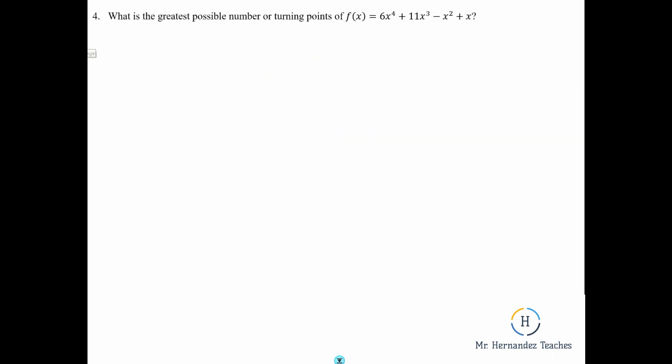Number 4 — what is the greatest possible number of turning points of f of x equals 6x to the 4th plus 11x cubed minus x squared plus x? We're not asking how many turning points there are, just the greatest possible number. You get that strictly from the degree: it's degree minus 1, so 4 minus 1 equals 3. The maximum number of turning points is 3. Remember that little tidbit of information.